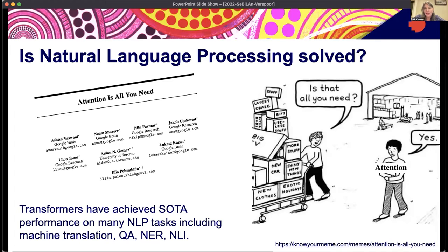Given the context we find ourselves in now, where we have papers proclaiming things like 'attention is all you need' — in other words, we're done, why bother, we have everything we need — it is indeed true that transformer models using attention have achieved state-of-the-art performance on many natural language processing tasks, including machine translation, question answering, named entity recognition, natural language inference, and many more tasks. So I think it's a good moment to ask the question: are we done? Can we just tick off natural language processing and move on to something else?